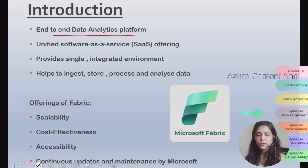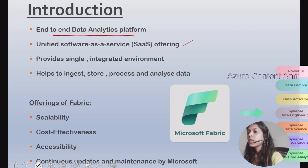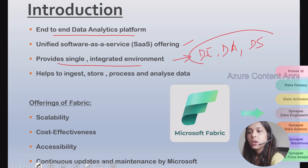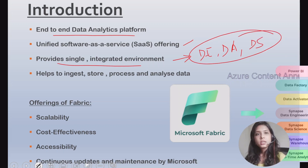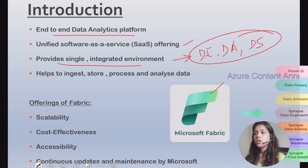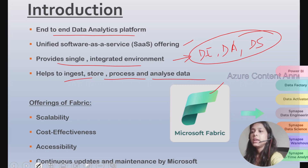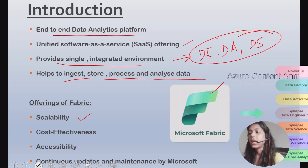Microsoft Fabric is basically an end-to-end data analytics platform released as a SaaS product — a Software as a Service offering by Microsoft. It provides a single integrated environment for all the data professionals, whether you are a data engineer, data analyst, or data scientist. All these data professionals can work in a single integrated environment called Microsoft Fabric, and it helps us to ingest, store, process, and analyze data.